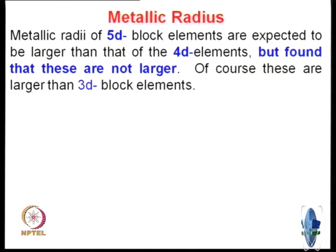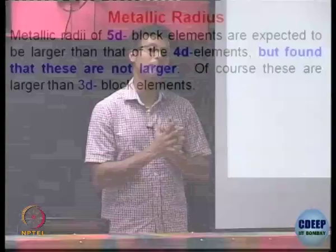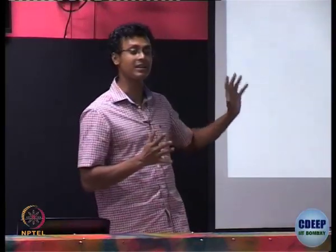The metallic radii of 5D block elements are expected to be larger than those of 4D. So going from 4D to 5D, we should expect larger size — larger compared to 4D and of course compared to 3D. But in reality, 5D elements are not larger compared to 4D, which seems to contradict what we have been discussing. Why is that?